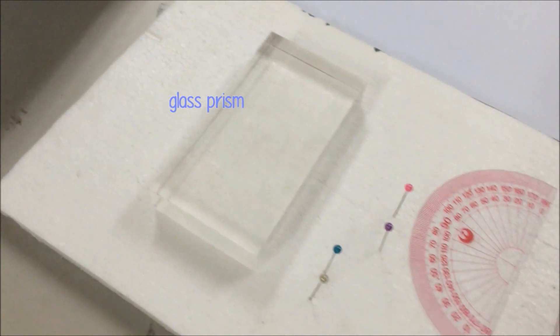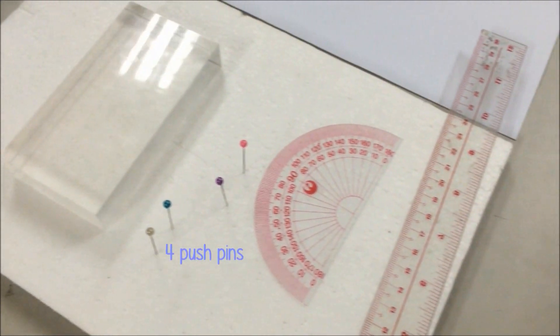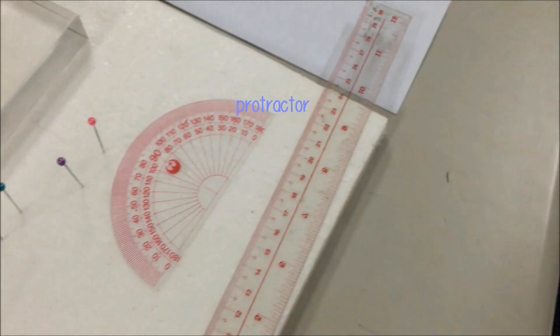For this experiment, the materials needed are a glass prism, four pushpins, a ruler, and a protractor.